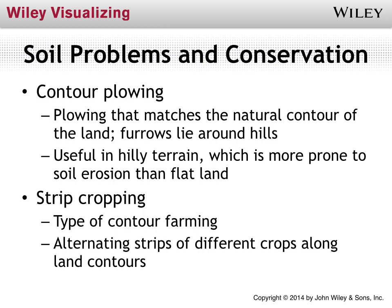If we're farming on hilly land, we can plow the land in a way that matches the natural contour, which will help minimize the potential for erosion. Another example is strip cropping — another type of contour farming where instead of planting one crop we alternate strips of different crops, still following the contour of the land, growing two different crops to maximize diversity and get maximum benefit from that land.